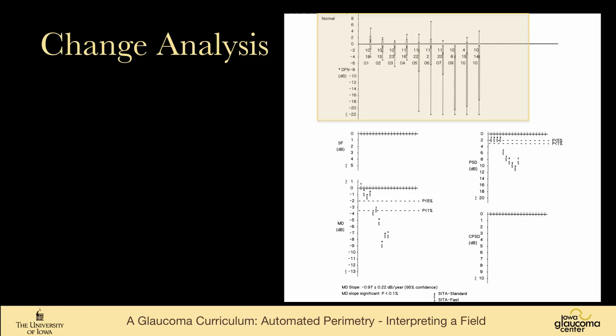You can also look at change analysis. There are three parts to the change analysis program. There are two parts here, short-term fluctuation, corrected pattern standard deviation, that exist in full threshold perimeters, which very few people use anymore, so we're not going to talk about those. Anytime you have a SITA field, which is marked by the S here, those two parameters don't exist.